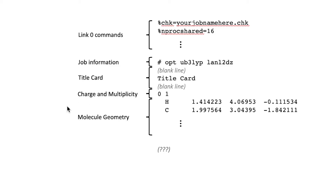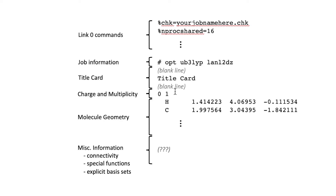And then you have the molecule geometry, which is just the name of the atom and the x, y, z coordinates. You'll have that for each atom, so it could be large. Then at the very end you have the miscellaneous information — things like specifying special functions and whatnot — but don't worry about that right now.